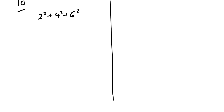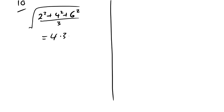Question 10: what is the root mean square speed of all particles? Add up all speeds squared, divide by the number of particles (3), then take the square root. That gives 4.3 m/s. That's how we calculate root mean square speed.